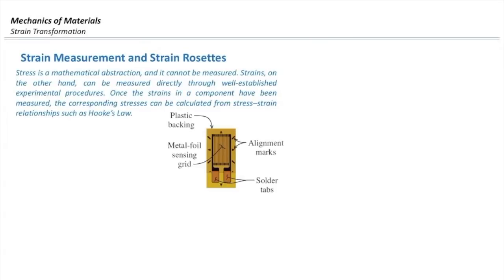In engineering, we sometimes need to determine the magnitude of stresses and strain at a certain point in our structure. One way to do that is installing a strain gauge on the surface of the element. Strain gauges are tools that can measure the magnitude of normal strain in a certain direction. We cannot directly determine stresses, but if we determine strains, then using the generalized Hooke's law, we can determine the magnitude of stresses at that point.